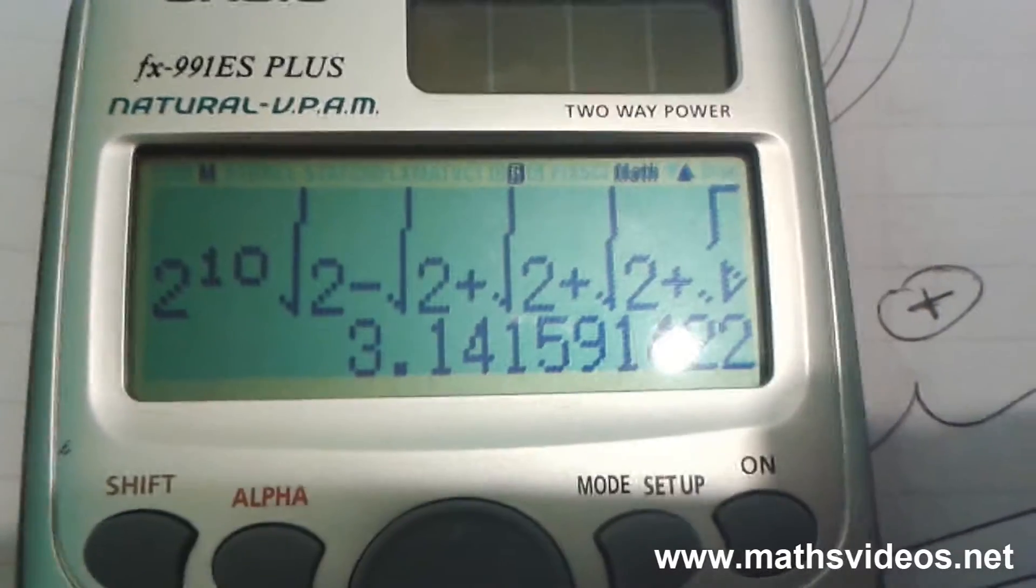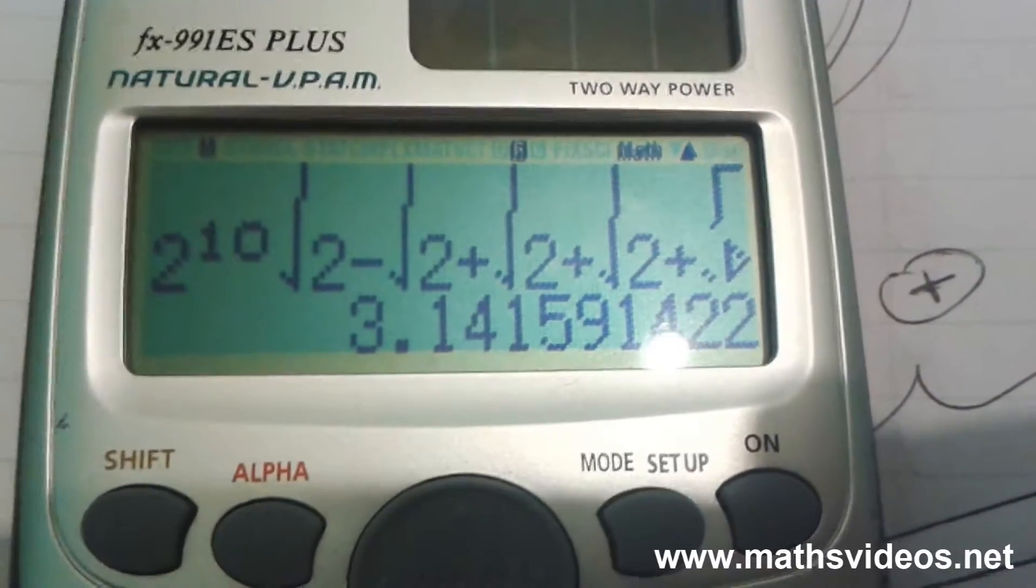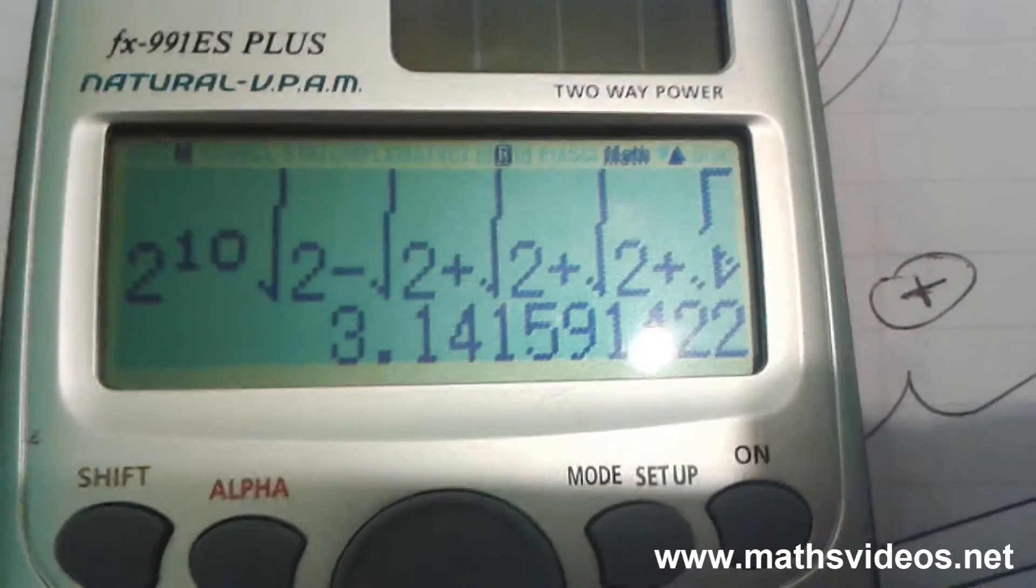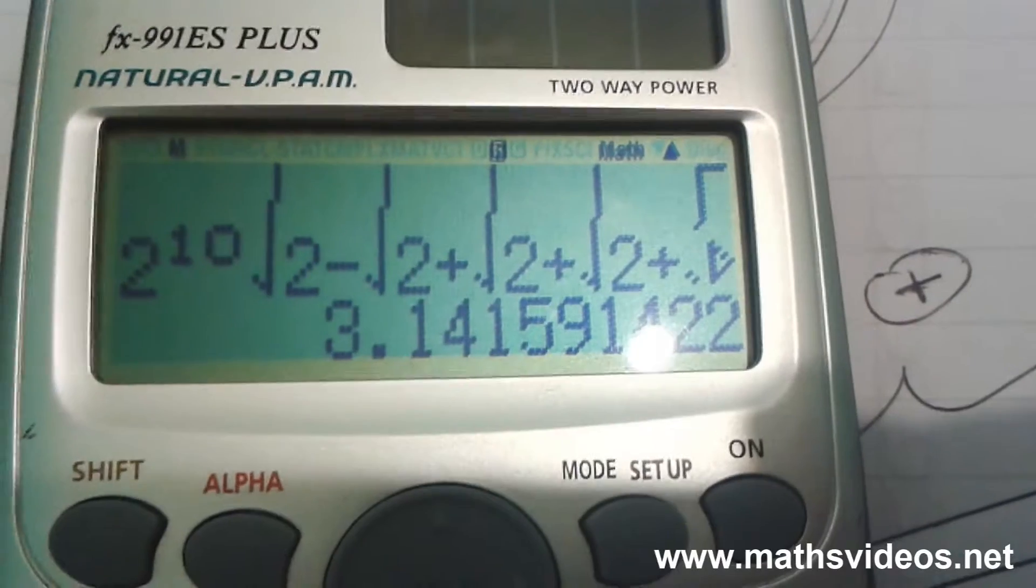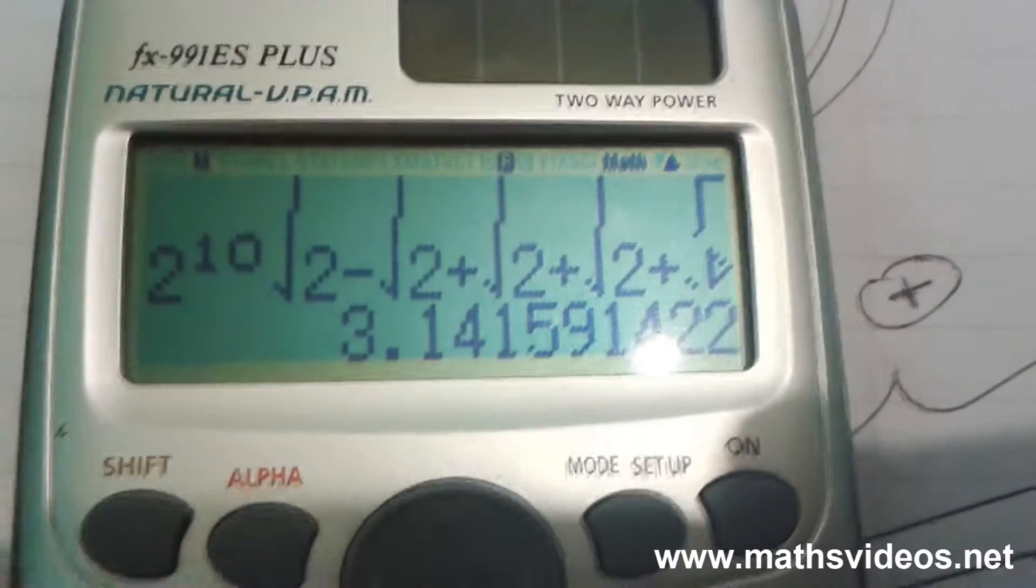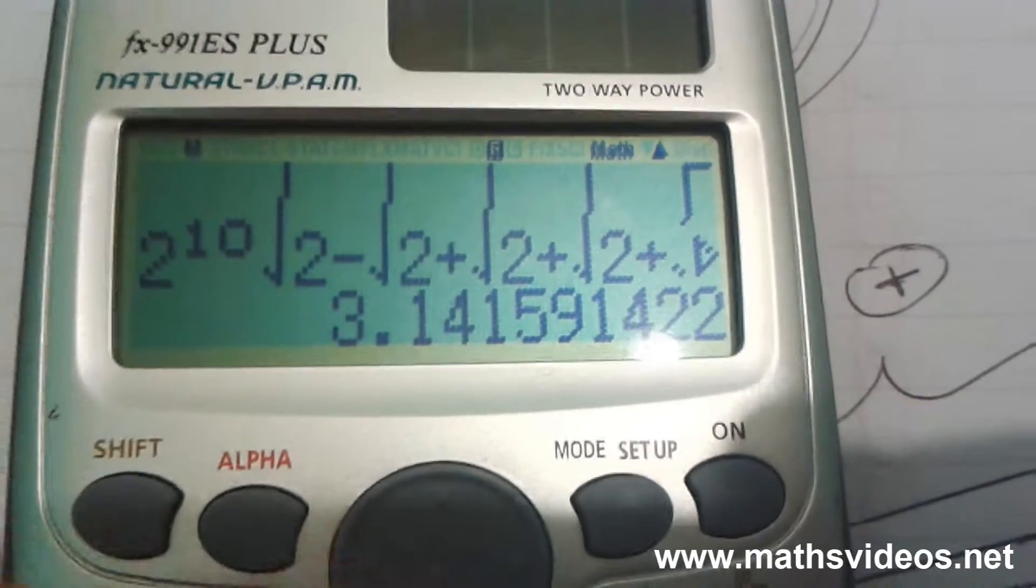See, I get a value very similar to pi. I get 3.14159, and then numbers that you won't find in pi. But this value over here is very, very close to pi.